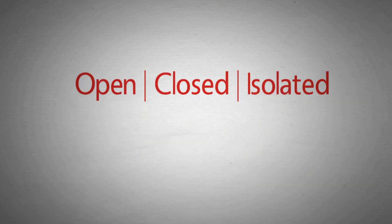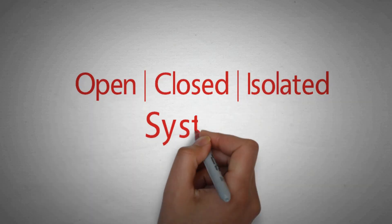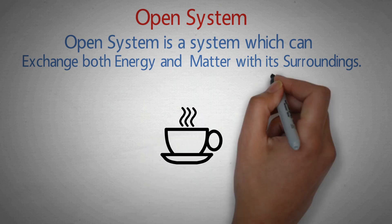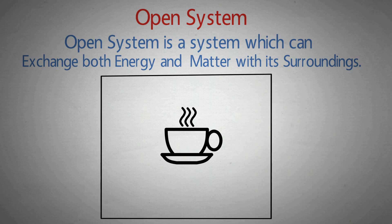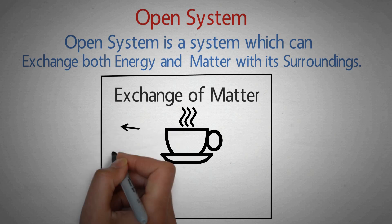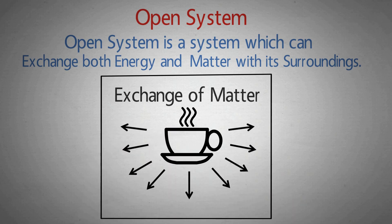Open, closed and isolated system. Open system is a system which can exchange both energy and matter with its surrounding. Here we have a cup of coffee — इस coffee का matter steam के form में surrounding के साथ exchange हो रहा है, साथ ही साथ यह अपनी energy भी surrounding में release कर रहा है। So this cup of coffee is an open system.